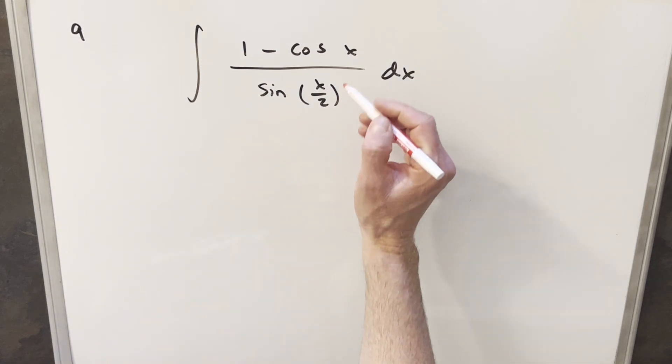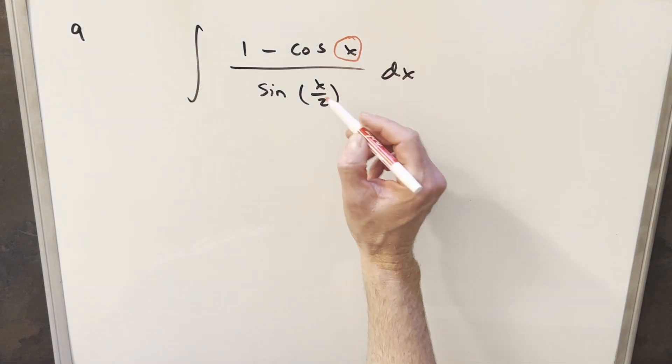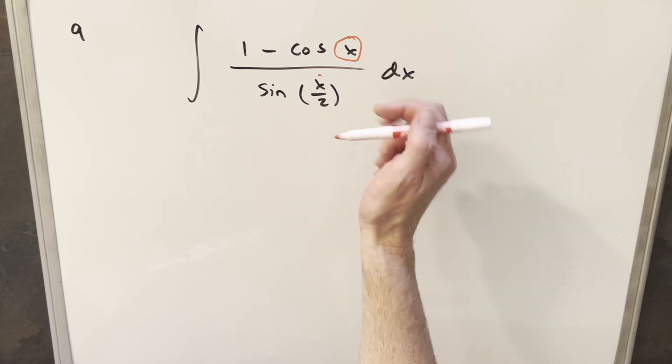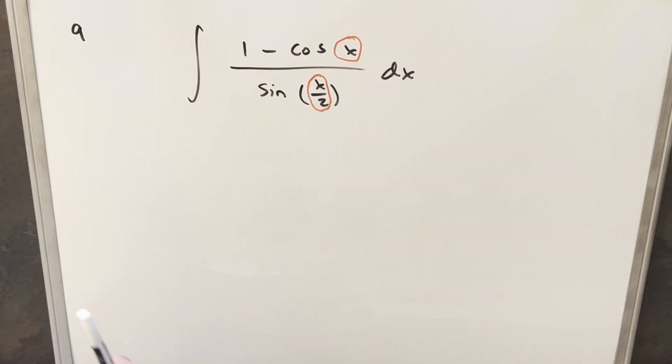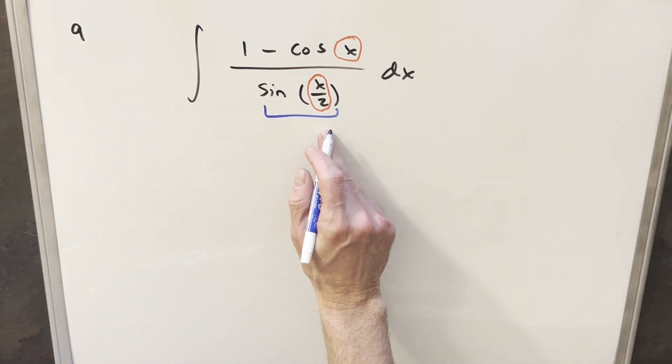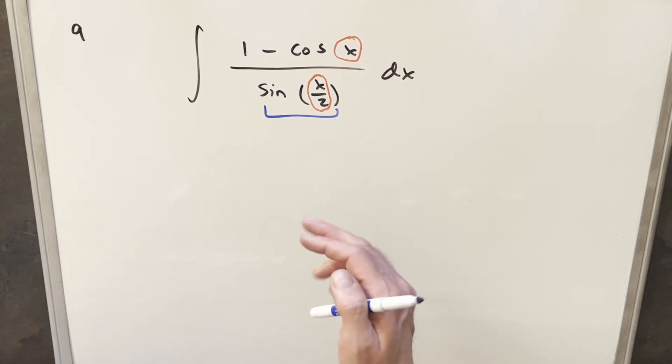My first concern with this one was just the fact that in our trig functions we don't have the same angle. Here we have in the numerator we've got an x and here we have x over two. So my thought was we could do it two ways. We could try to convert sine x over two into x or we could take the cosine x and try to convert it into something with x over two.